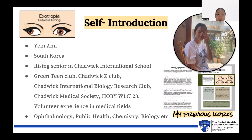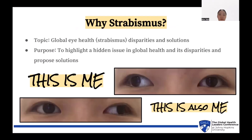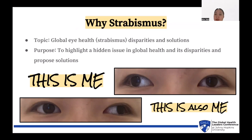The photos at the bottom right are my previous works about Strabismus. My topic for today is global eye health, especially Strabismus disparities and solutions, and my purpose is to highlight a hidden issue in global health and propose solutions. I am particularly passionate about Strabismus because, as you can see in my previous works, I myself have Strabismus, as shown in the photos below.